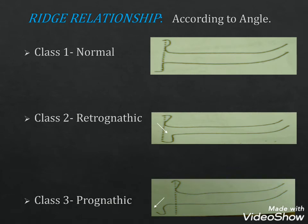Ridge relationship describes the anterior-posterior relationship of the maxillary residual ridge relative to the mandibular ridge when jaws are in centric relation. According to Angle, Class 1 is normal ridge relationship. Class 2 is characterized by a retrognathic mandible, and Class 3 by a prognathic mandible. A prognathic mandible often places unfavorable stresses on the maxillary basal seat area.